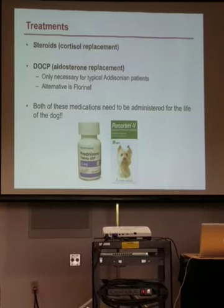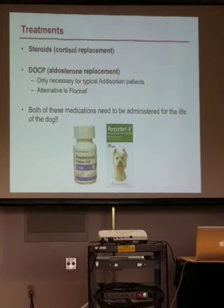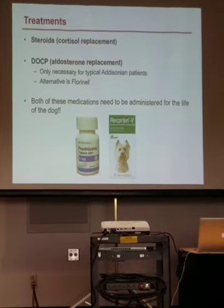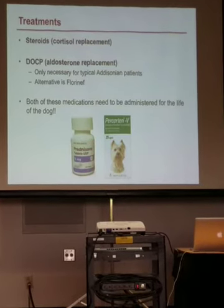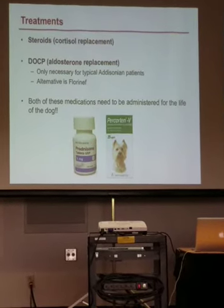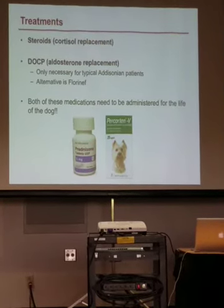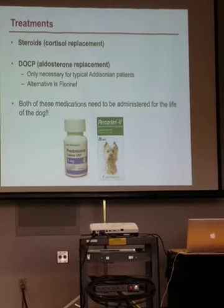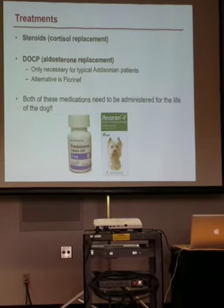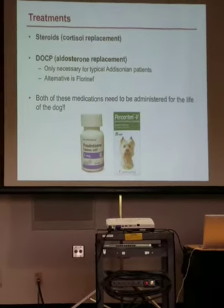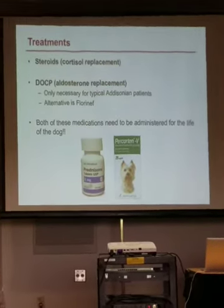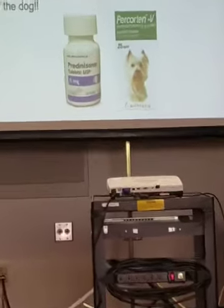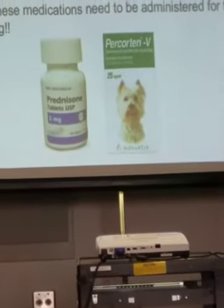Both medications — Percortin and Cremasone — need to be given for the life of the dog. They're not something you give just once. It is a chronic disease, but it is manageable, and again, must be given for life.